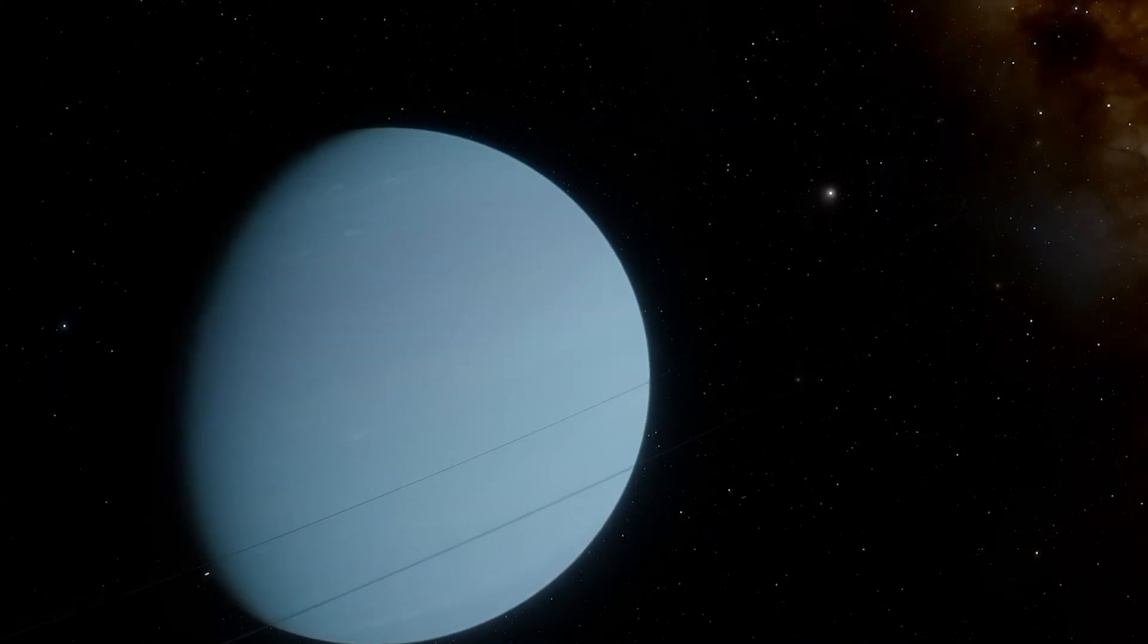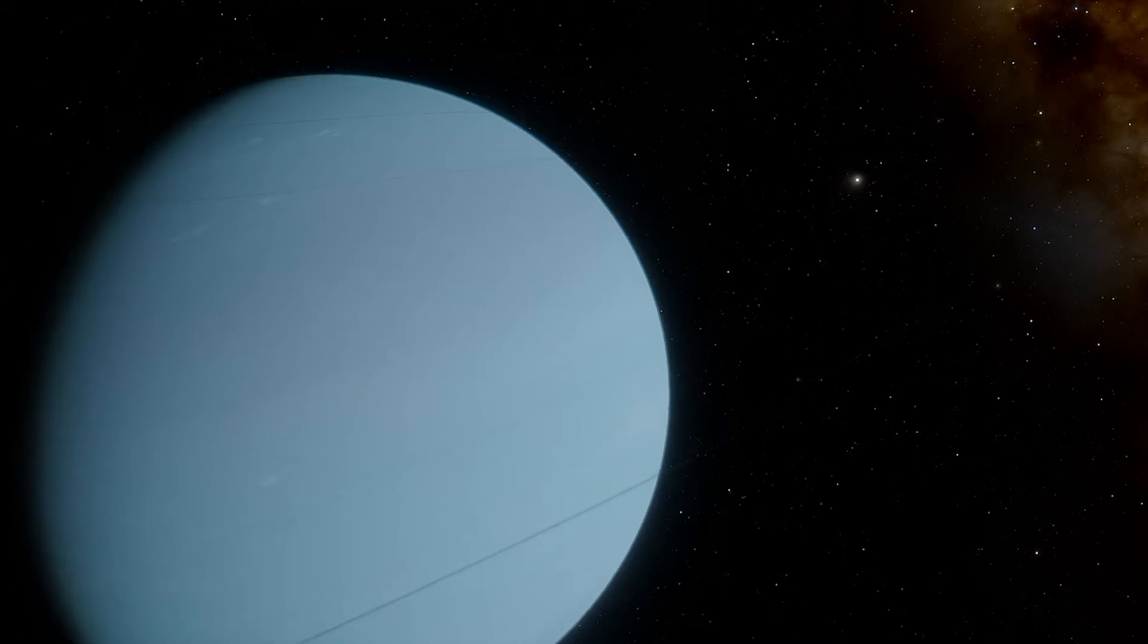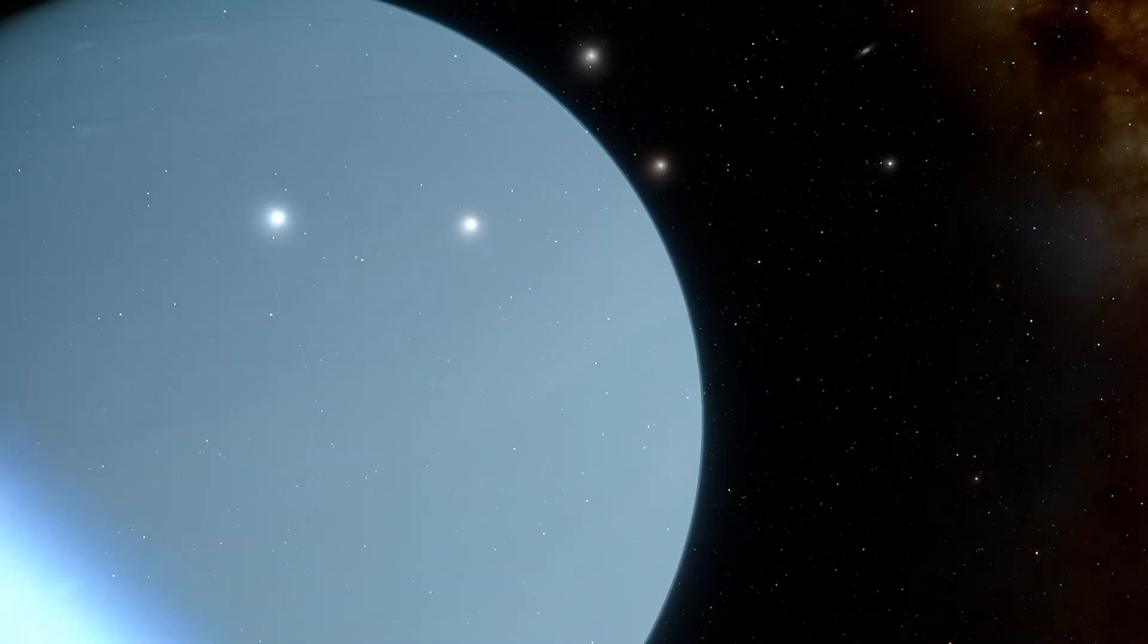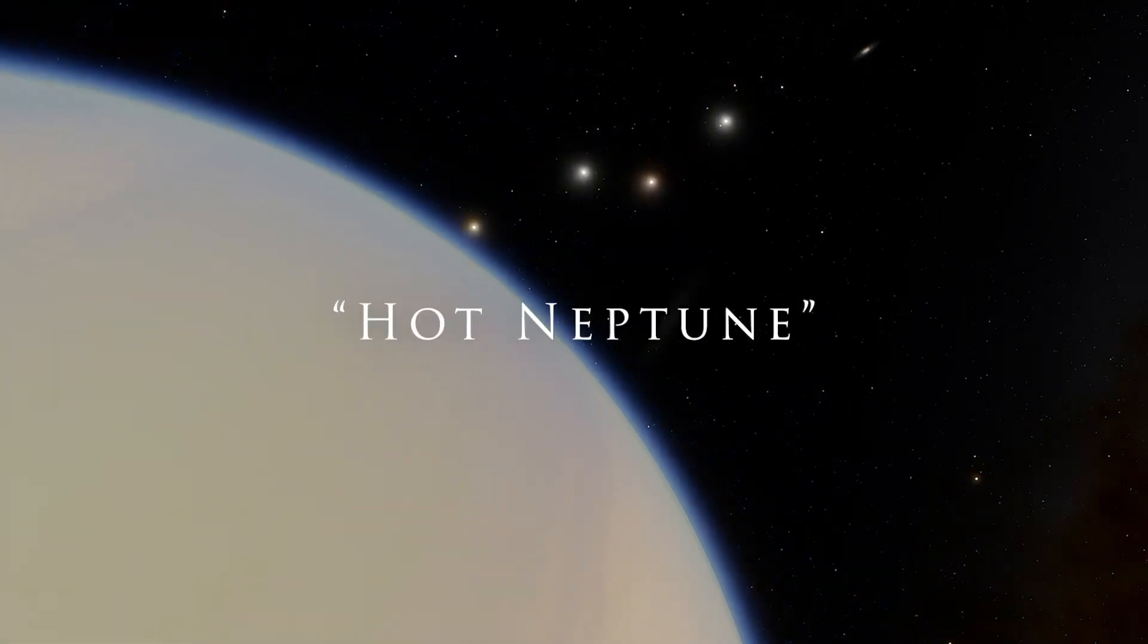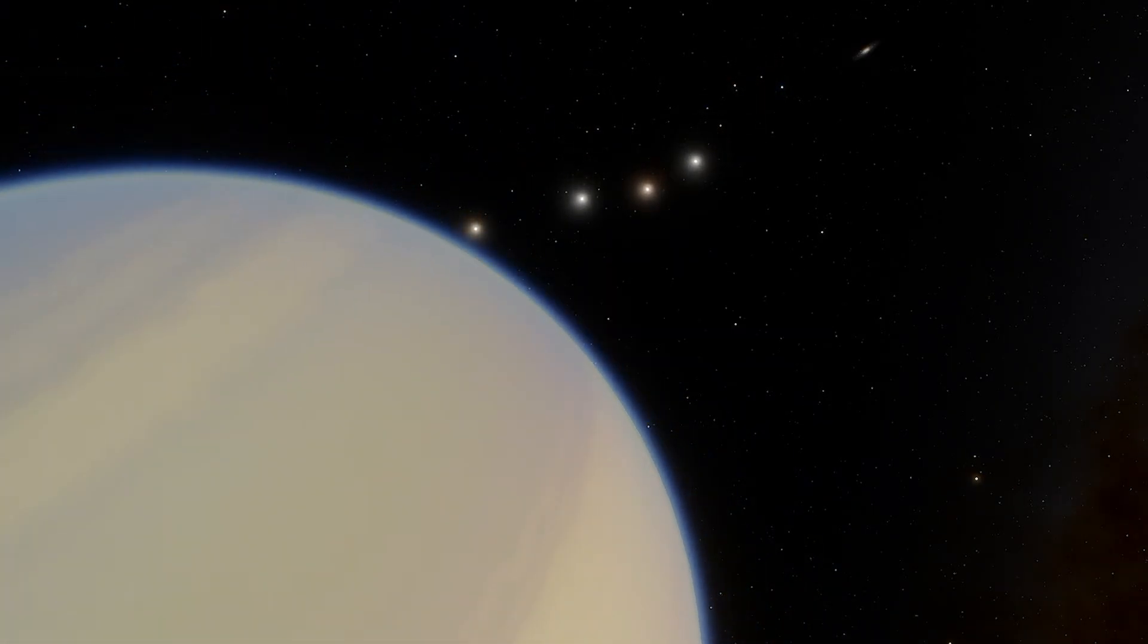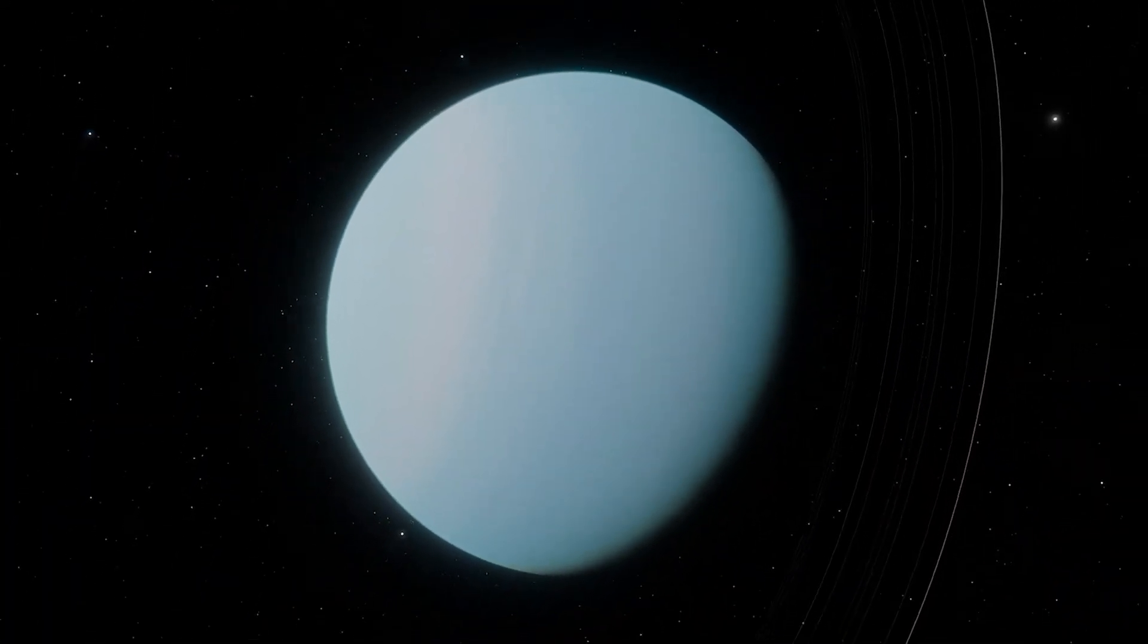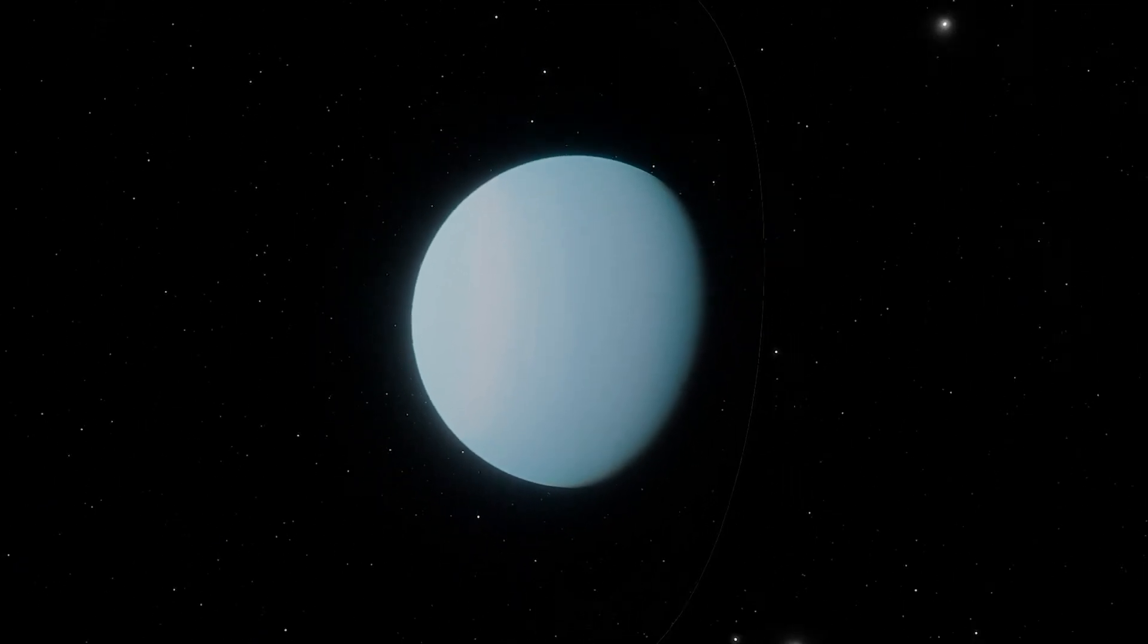Ice giants being of very different composition would be very different if one that much. Thus, the Sudarsky class is only for proper gas giants. An ice giant in close orbit to its star is known as a hot Neptune, and compared to hot Jupiters, relatively few of them have been found. Ice giants have atmospheres dominated by methane, which absorbs red light, giving them their blue appearance.